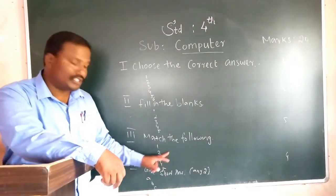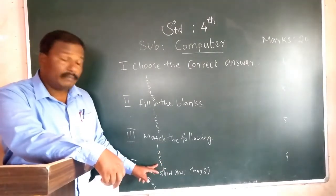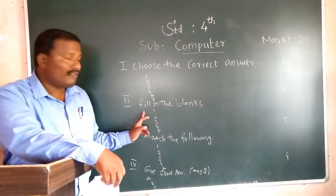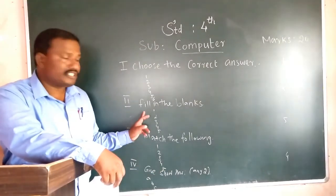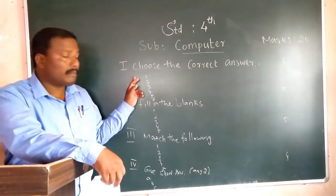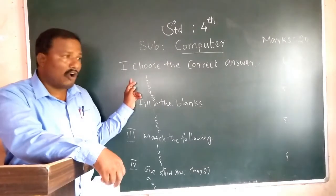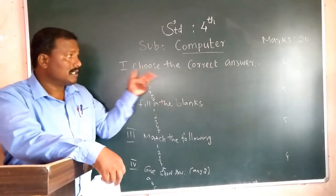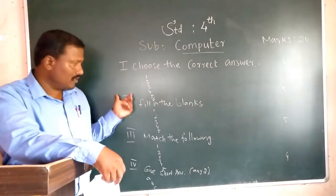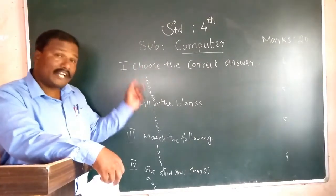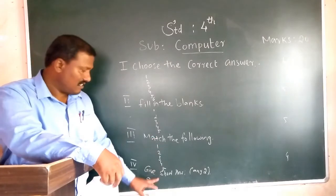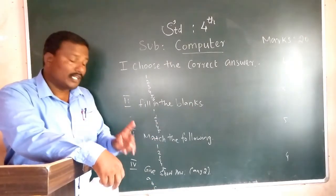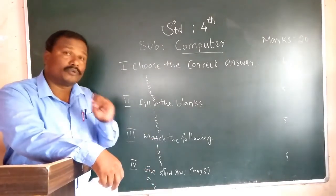To summarize: Match the following has all five questions — answer all. Fill in the blank has five questions — answer all. Choose the best answer has six questions — answer all. But for Roman numeral IV, there are all options and you write any two answers only.